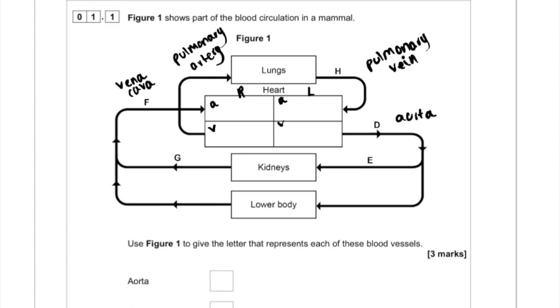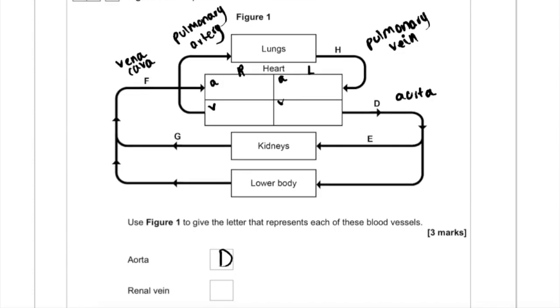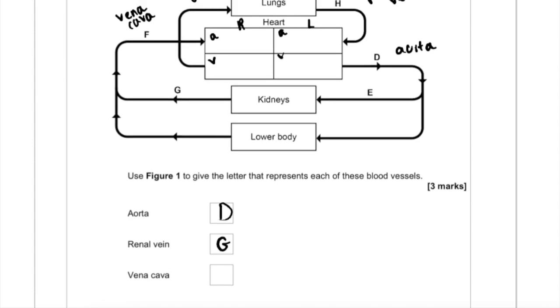So from this, we can see that the aorta is labelled D. And then the renal vein, we can work out to be G because renal means kidney and it's going away from the kidney at a lower pressure, so it must be a vein. And then finally, the vena cava must be F. We've already labelled that, but that's a vein taking blood back to the heart.